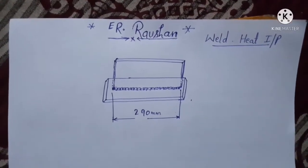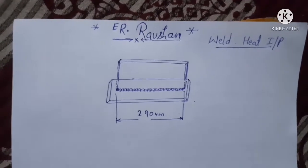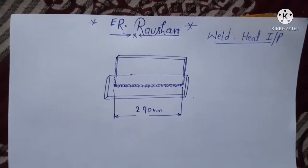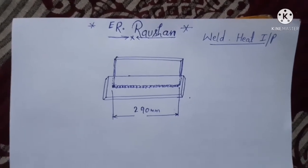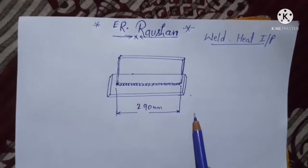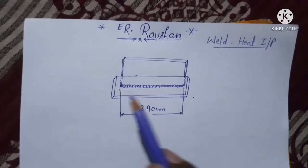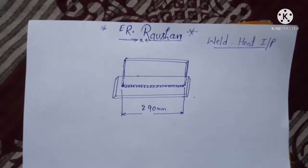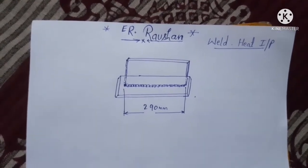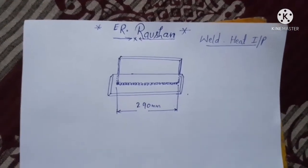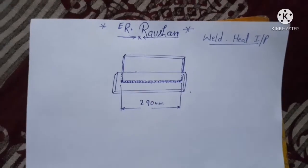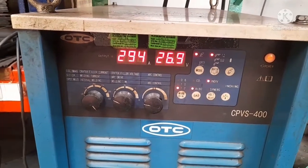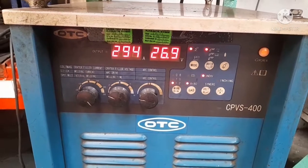Hi friends, today we discuss equations on the basis of heat input during welding — that is, how much heat is required to weld two parts to each other. First of all, see my practical videos on welding. During welding, you also calculate your travel speed, that means welding speed, as well as time to complete the welding length. Here the welding parameters are 294 ampere and 26.9 volt.